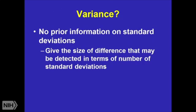Variance — no prior information on standard deviations. This might be where you talk about detecting the size of difference in terms of standard deviations. This is where effect sizes that Cohen and others defined — and they're different for different regression models — can be useful. Again, it's your starting step, but it's not going to be what you use for a pivotal or final study.